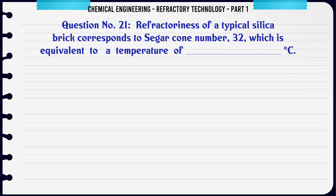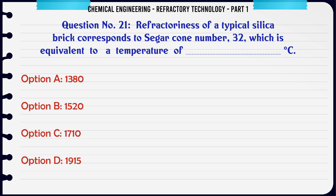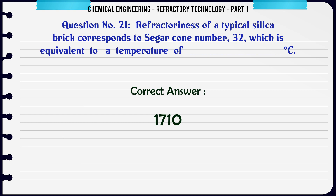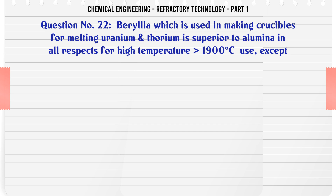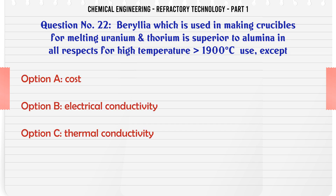Refractoriness of a typical silica brick corresponds to Seger cone number 32, which is equivalent to a temperature of ___ °C. A. 1380, B. 1520, C. 1710, D. 1915. The correct answer is 1710.